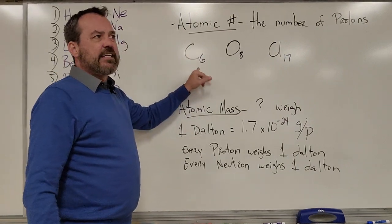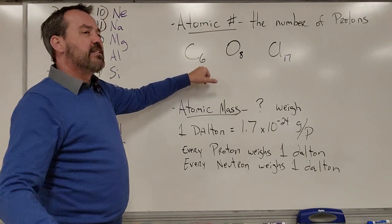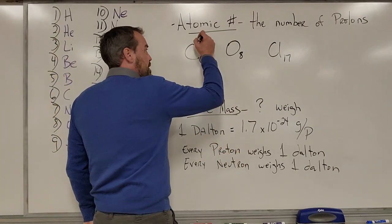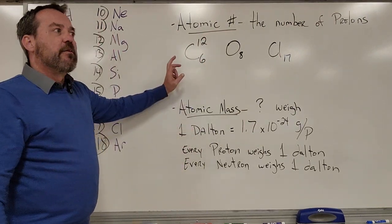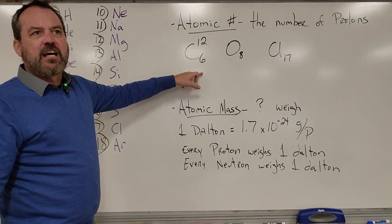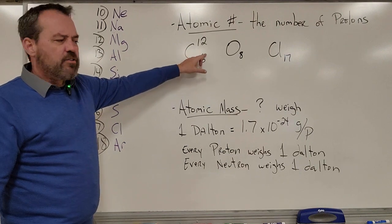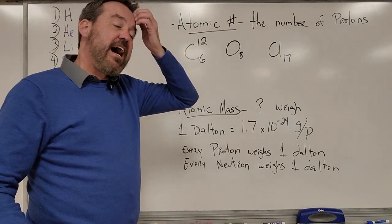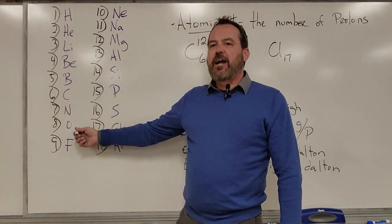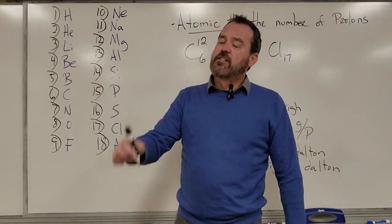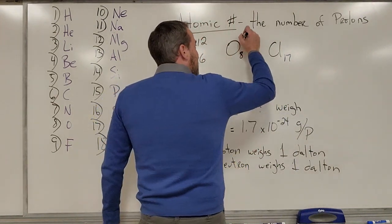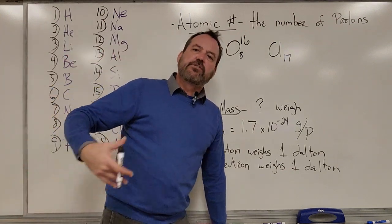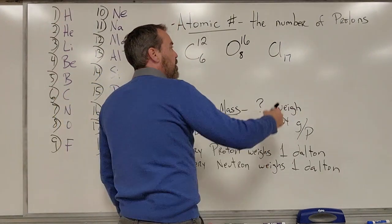For oxygen — O8 — that's 8 protons, 8 neutrons, and 8 electrons, but electrons don't weigh anything. So 8 plus 8 is 16 Daltons. For chlorine — 17 — that's 17 protons, 17 neutrons, 17 electrons, electrons don't count, so 17 plus 17 is 34 Daltons. The upper number is the mass number, and the lower number is the atomic number.